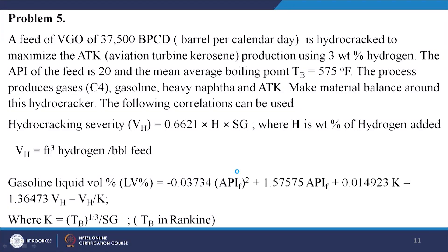The next problem: a feed of VGO of 37,500 BPCD is hydrocracked to maximize ATK (aviation turbine kerosene) production using 3 weight percent hydrogen. The API of the feed is 20 and the mean average boiling point TB = 575°F. The process produces gases, gasoline, heavy naphtha, and ATK. Make a material balance around this hydrocracker.